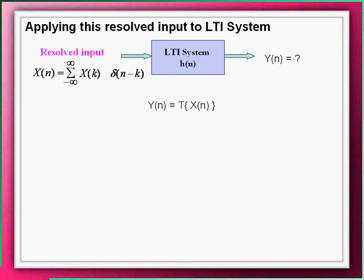Definitely the output Y(n) of the system is obtained by doing some transformation or processing on the input. This transformation is denoted as T. Replacing this input by its resolved form.